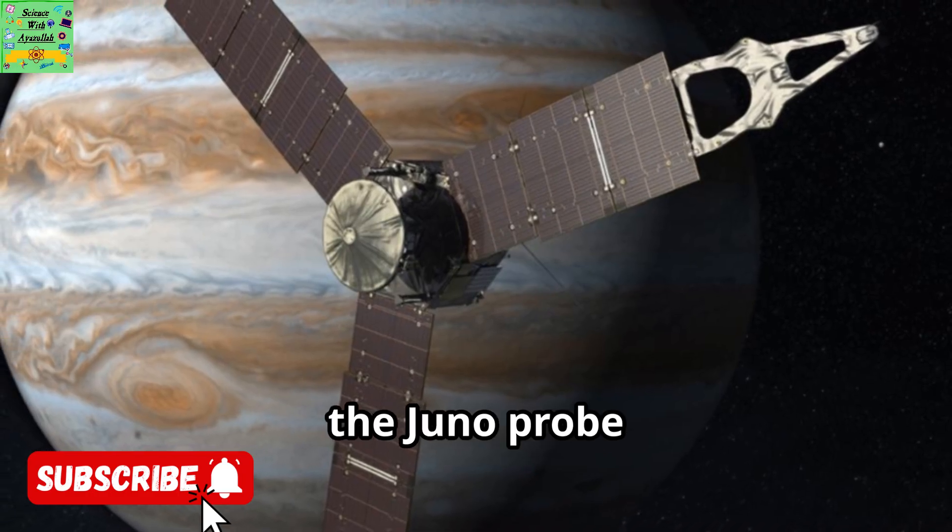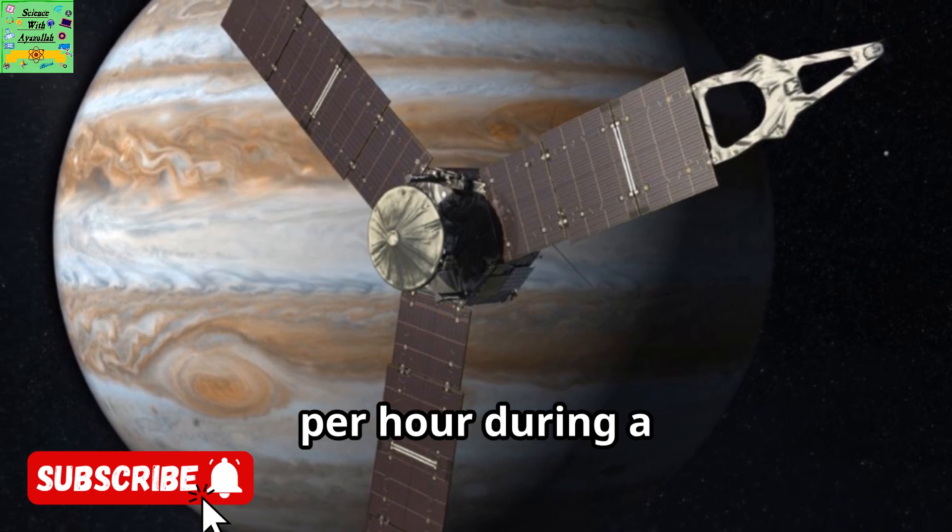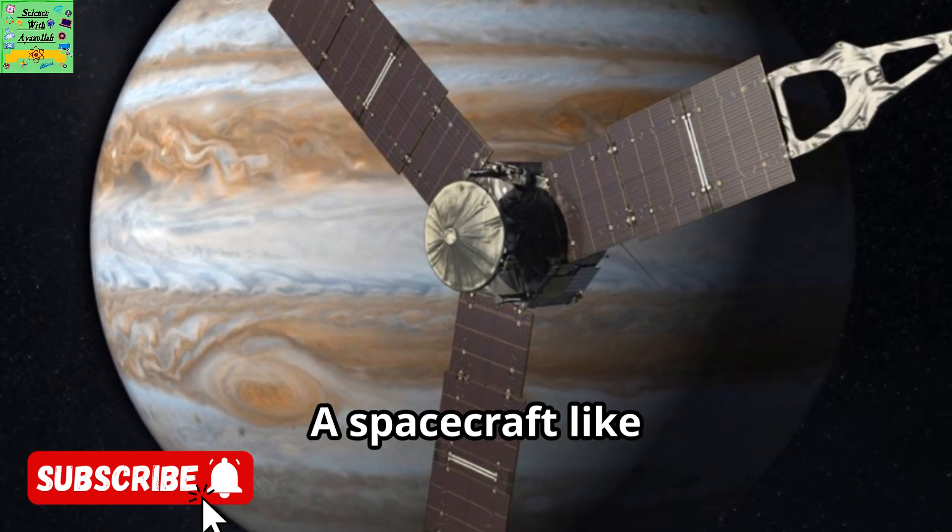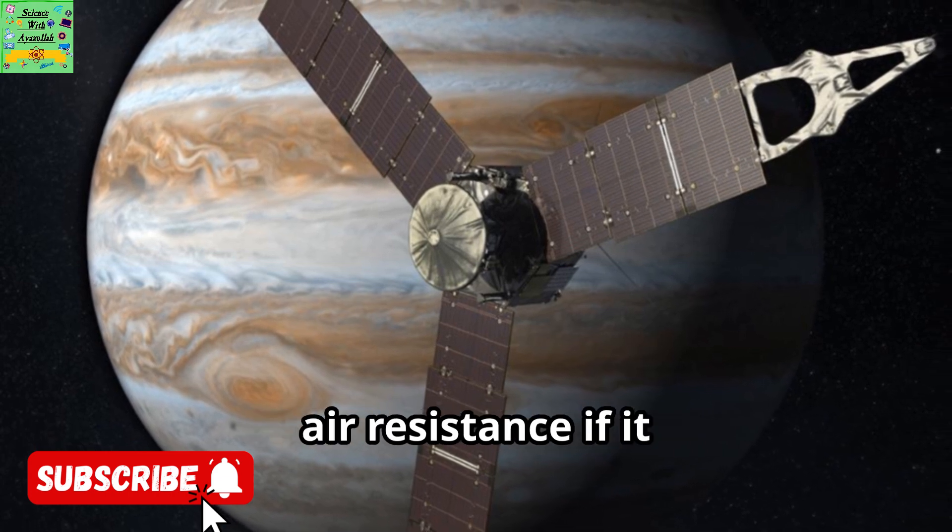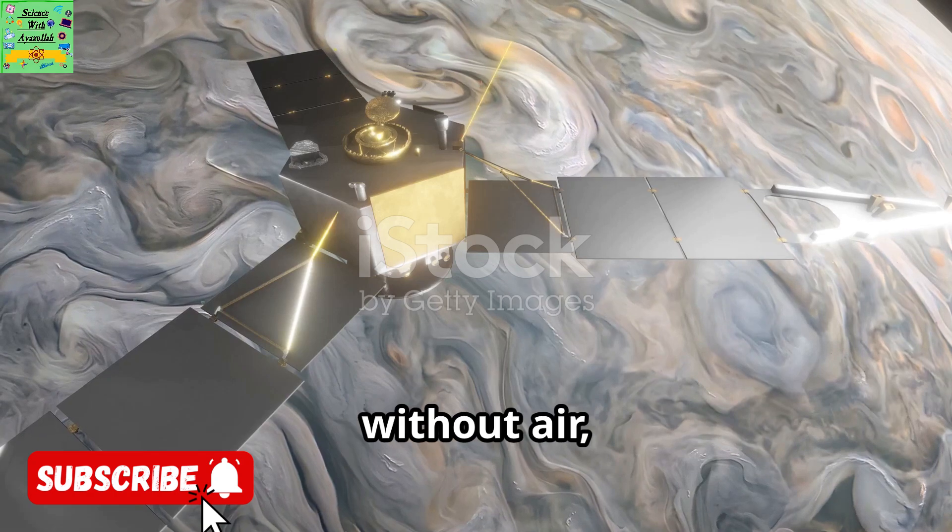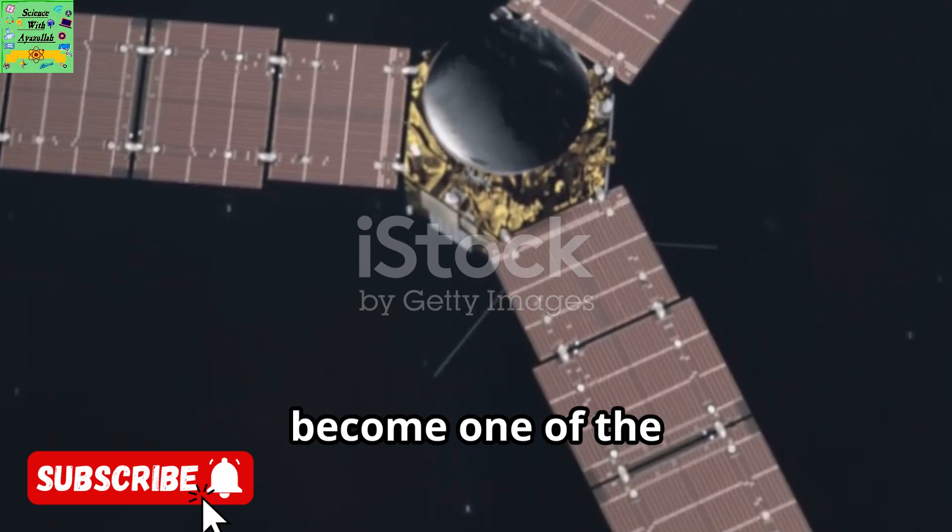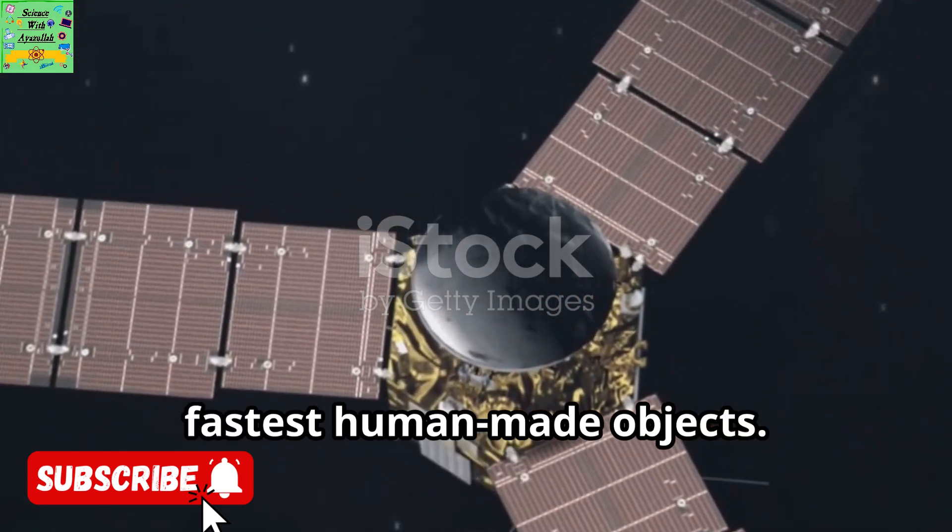That's why spacecraft can reach speeds impossible on Earth. For example, the Juno probe reached about 265,000 kilometers per hour during a fast Earth flyby. A spacecraft like Juno would have huge air resistance if it tried to move that fast on Earth. But in space, without air, there's nothing to slow it down. So it kept accelerating. That let Juno become one of the fastest human-made objects.